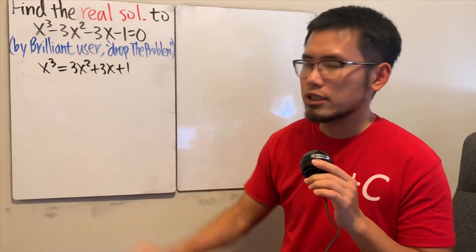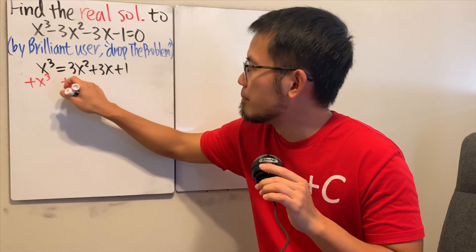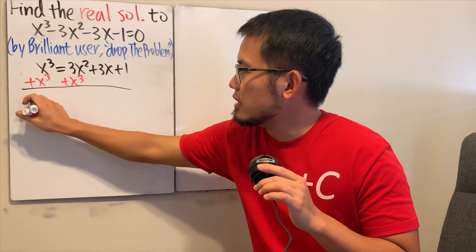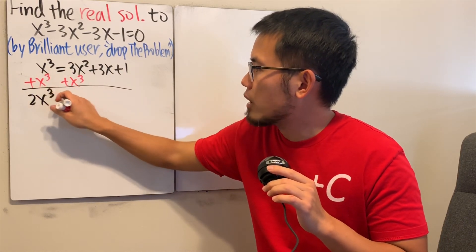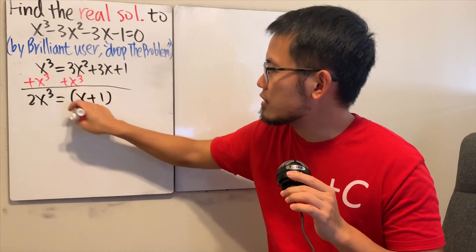But we do not have x³ here. It's okay. I'm just going to add x³ on both sides. And you see, this right here is just nicely 2x³. And this right here, we get (x+1)³.